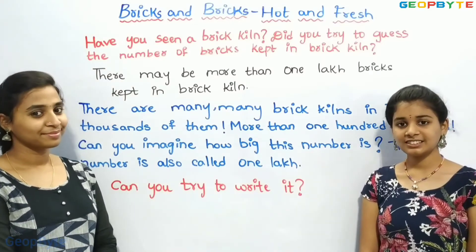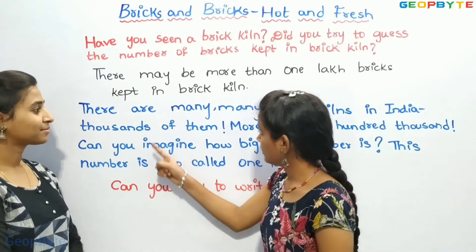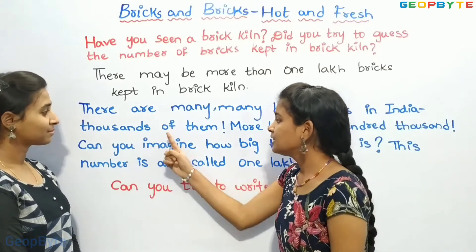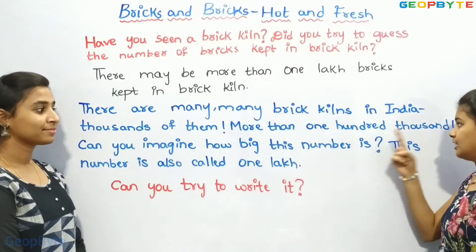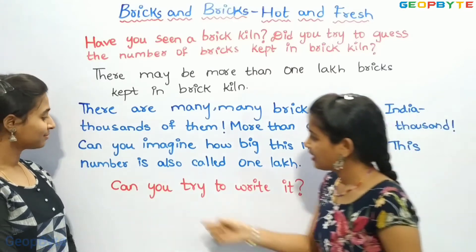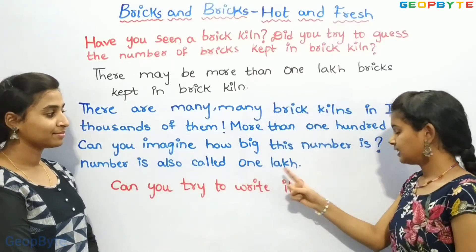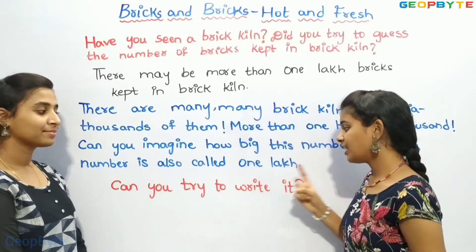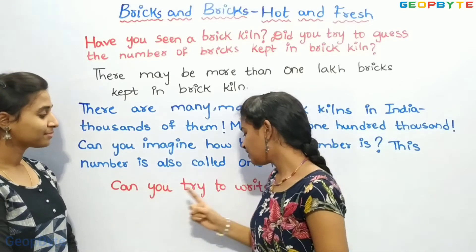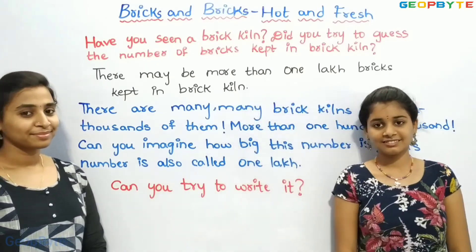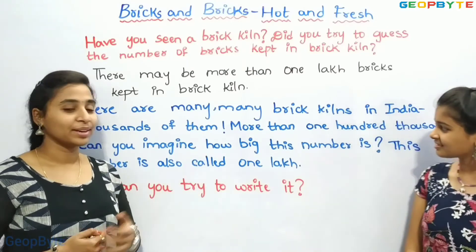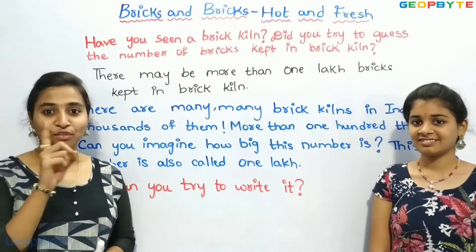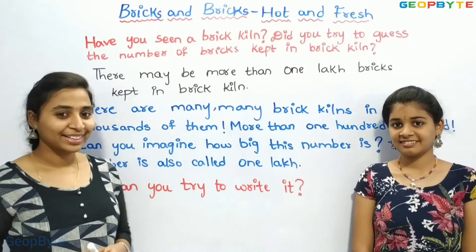There are many, many bricks in the brick kiln. There are many brick kilns in India — thousands of them, more than 100,000. Can you imagine how big this number is? This number is also called 1 lakh. Can you try to write it? 100,000 means 1 lakh. So 1 lakh will have 1 and 5 zeros.